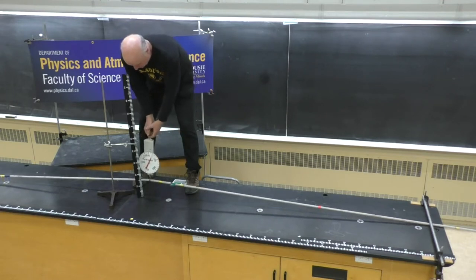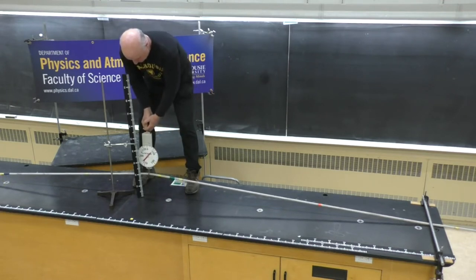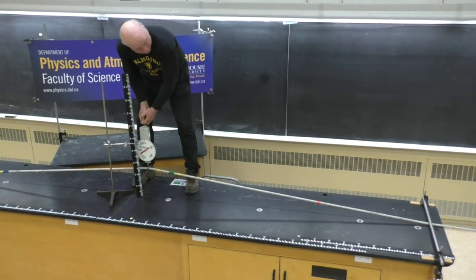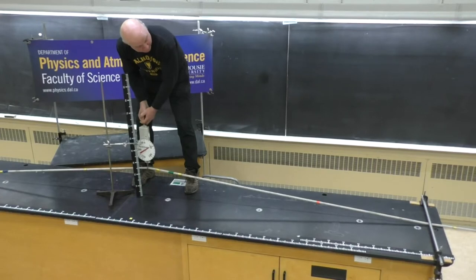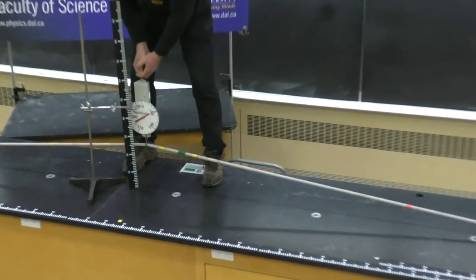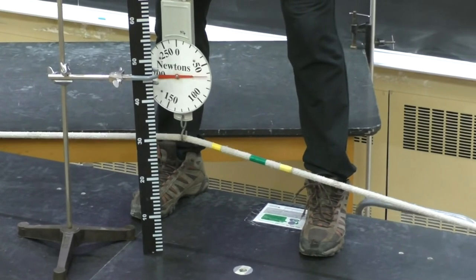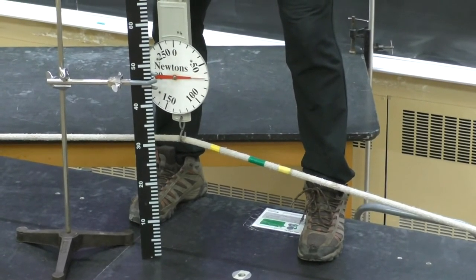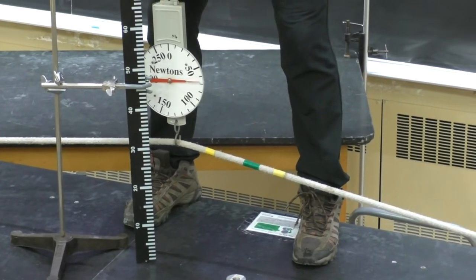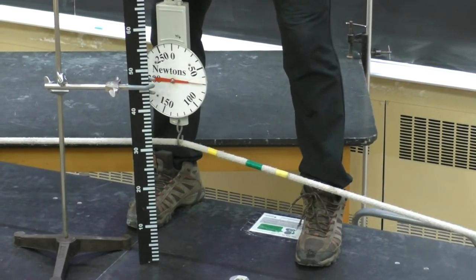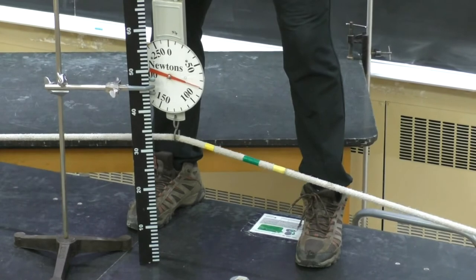So you can see the tension increase here, 50 newtons. And by now I've established 200 newtons on the other spring scale. And if I pull up some more, I've got 70 newtons here and almost 225 newtons tension in the cable, in the rope. And if I pull some more,